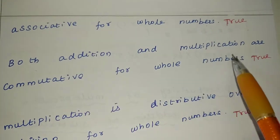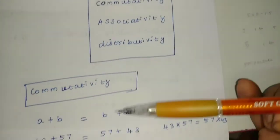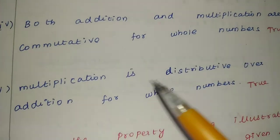Similarly, both addition and multiplication are commutative for whole numbers. Yes, commutative property we use for addition and multiplication. Statement correct is true. Next.